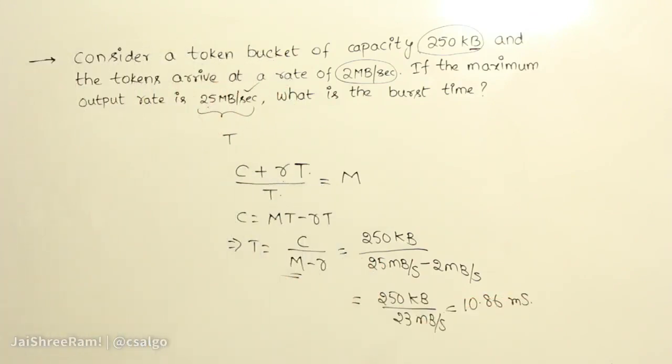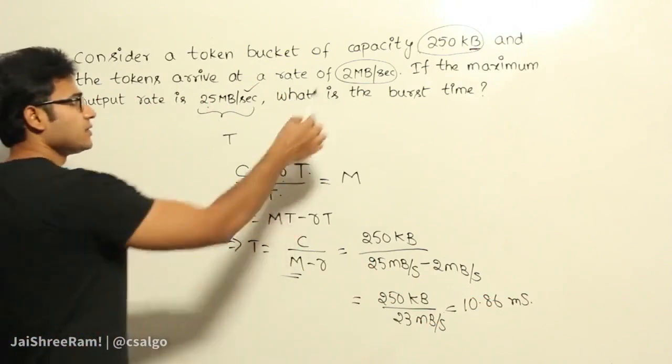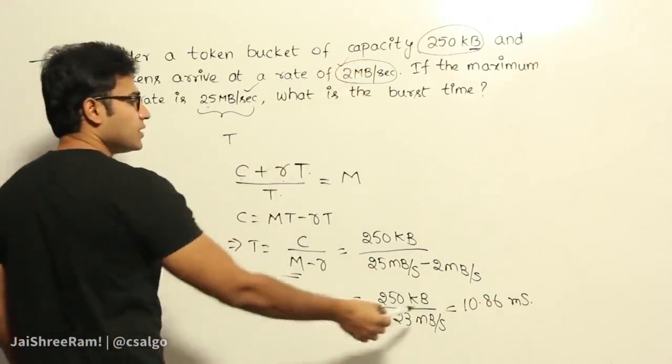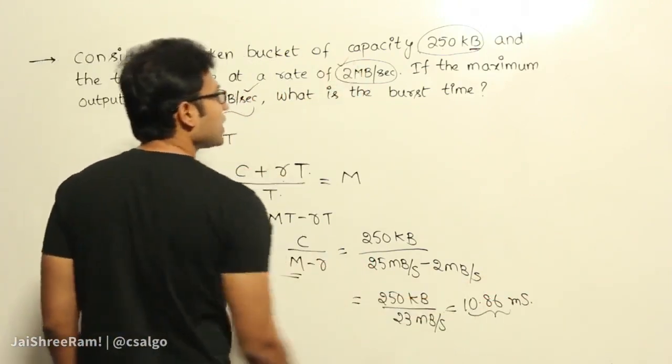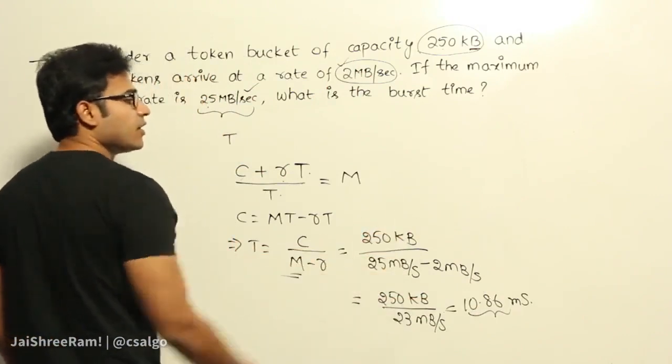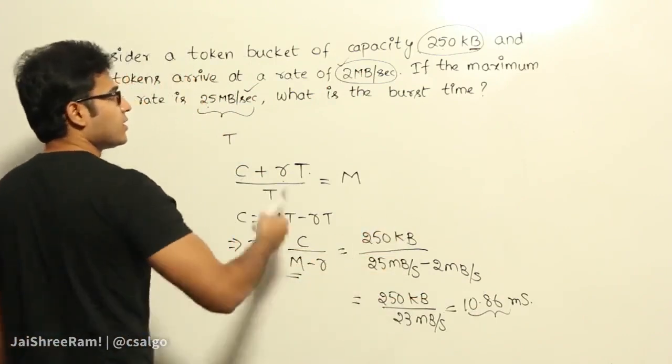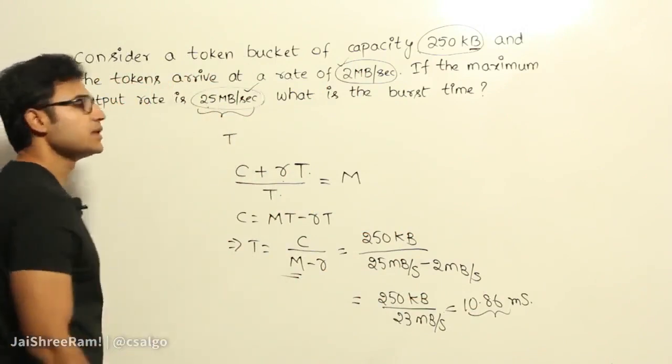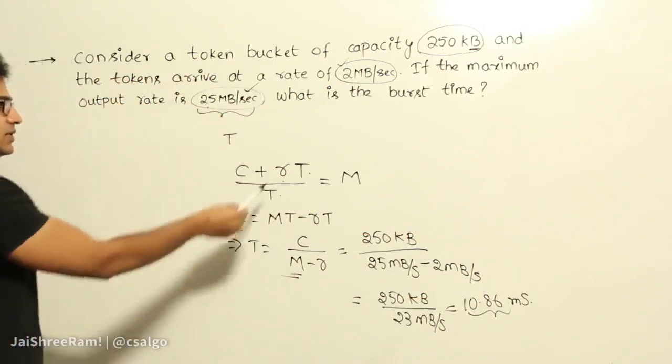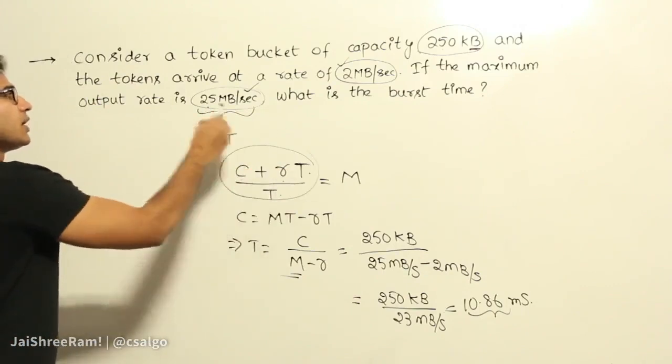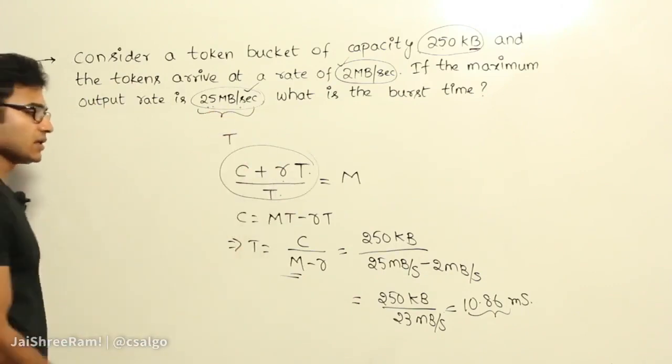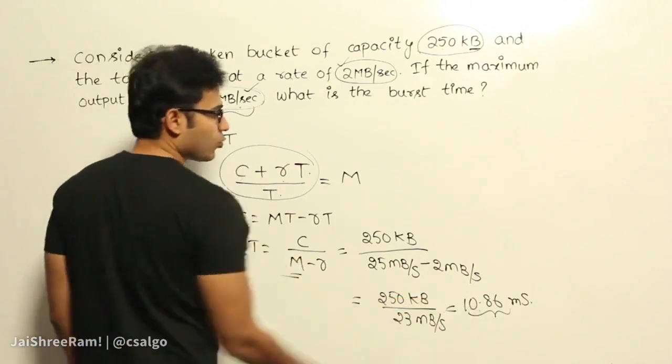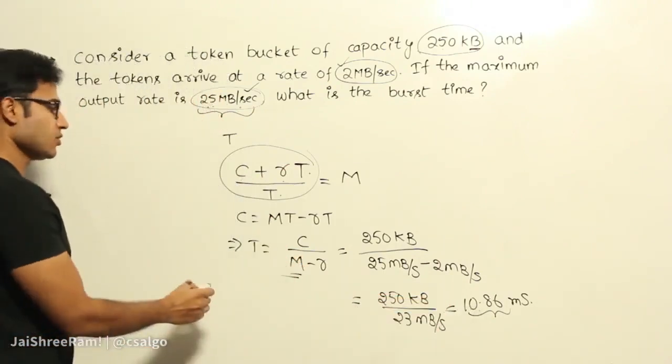So if you let this rate come for this much time, then the number of bytes that would have entered the network would have been at a rate of 25 Mbps, got it? So which means if you compute this, you are going to get 25 Mbps if you allow the rate for 10.86 milliseconds. That is the meaning of it.